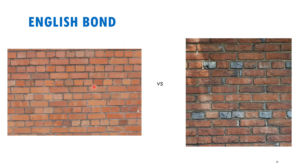For the English bond, it's similar to the common bond; however, this time the header layer is adopted every other row. Starting from the bottom: there's a header row, then a stretcher row, then back to header, then stretcher, and that pattern keeps repeating. Contrasting the English bond pattern with the common bond, you'll notice that the difference is that you've got more header rows in your English bond compared to your common bond.